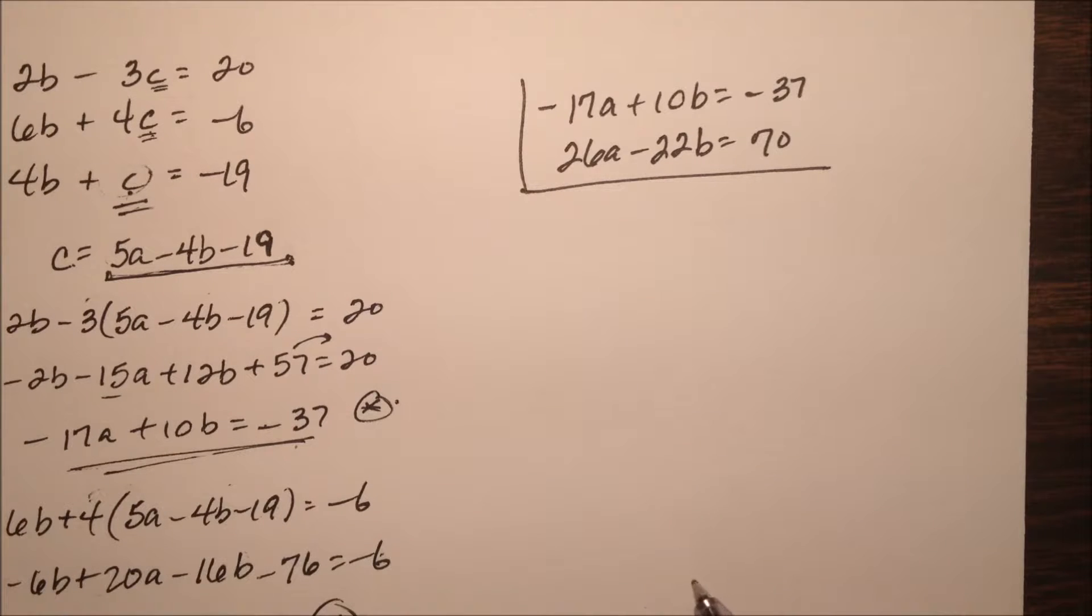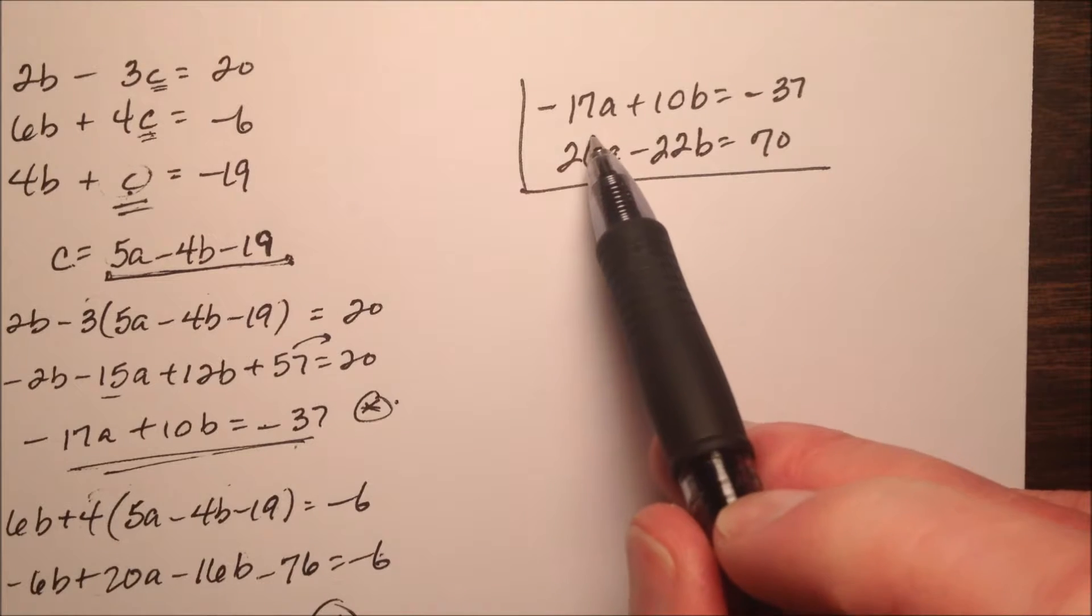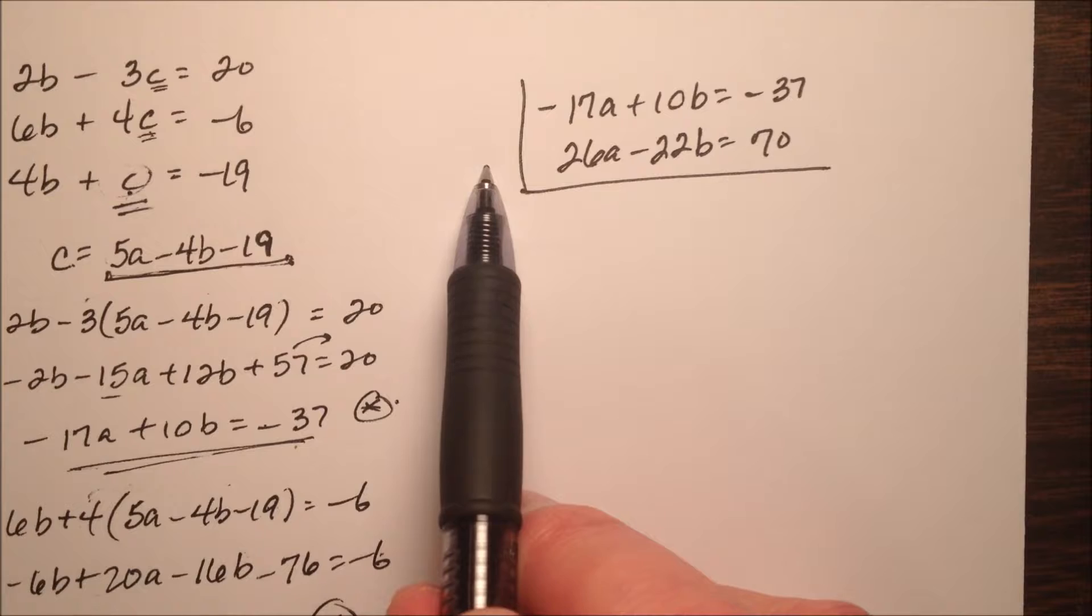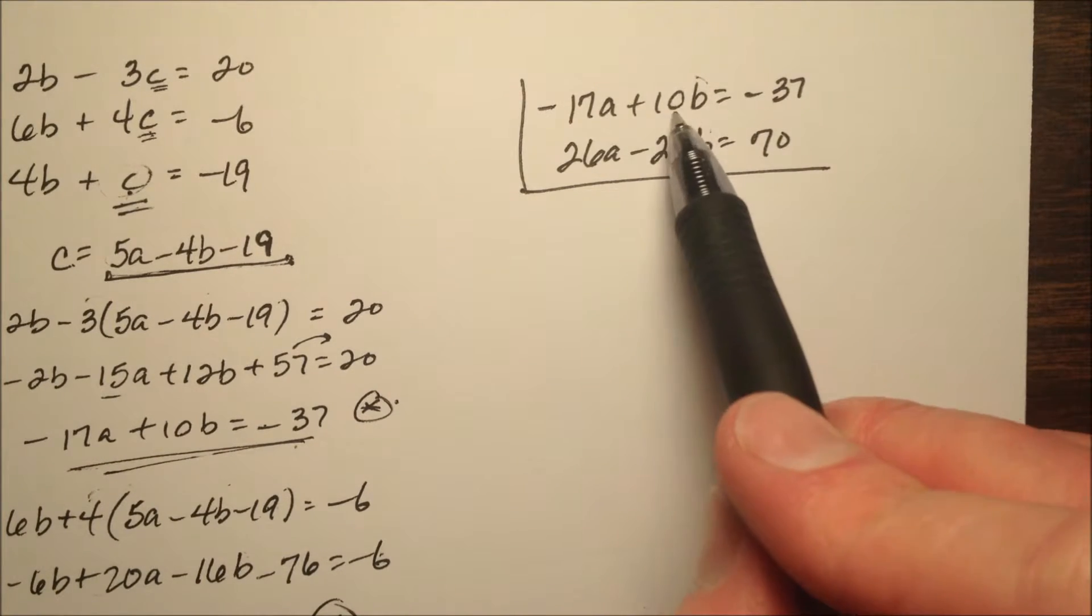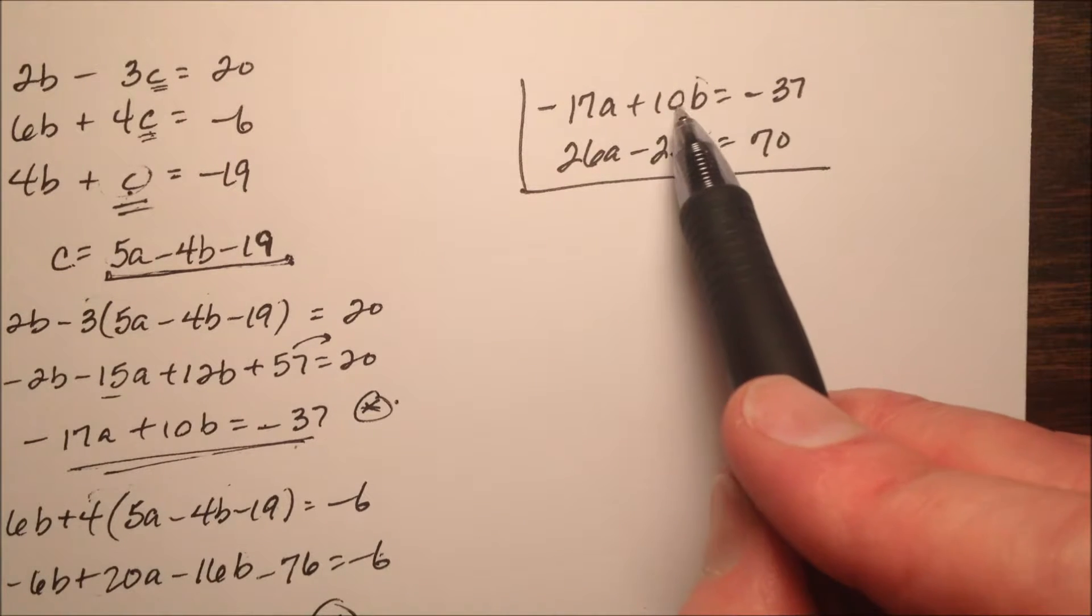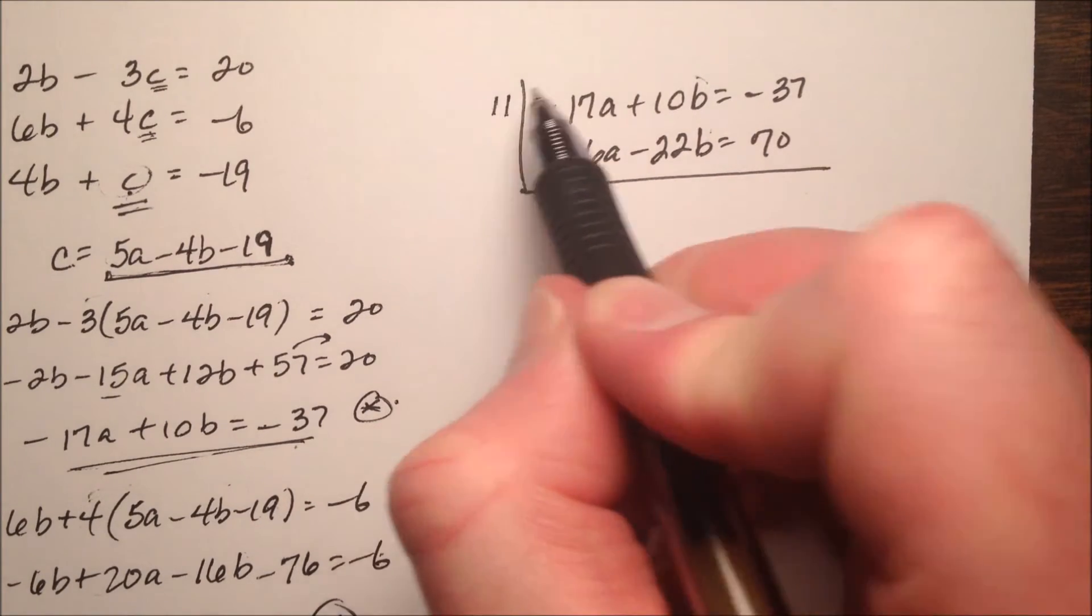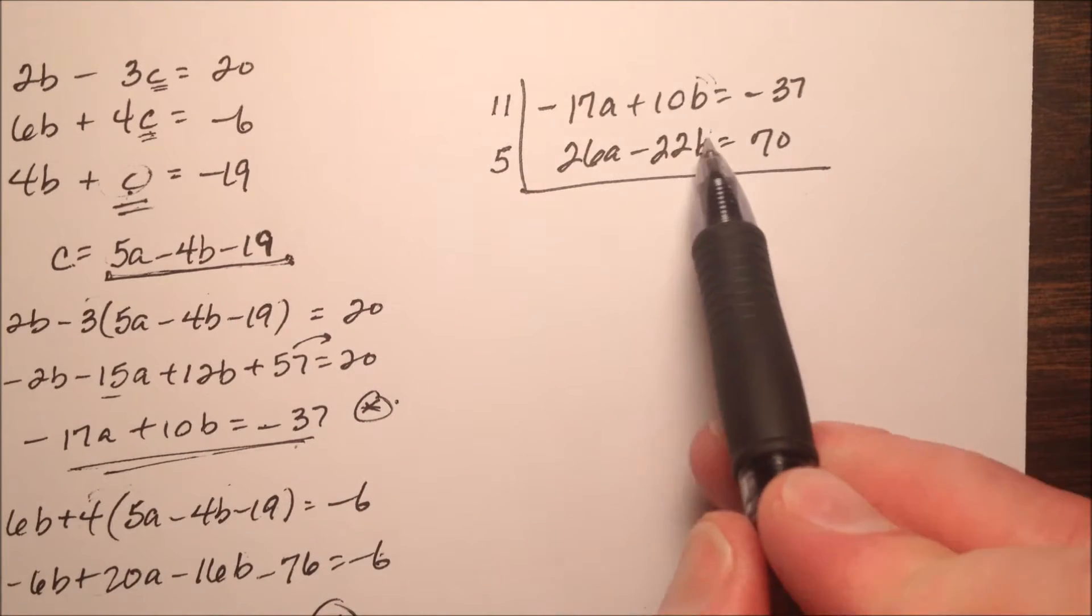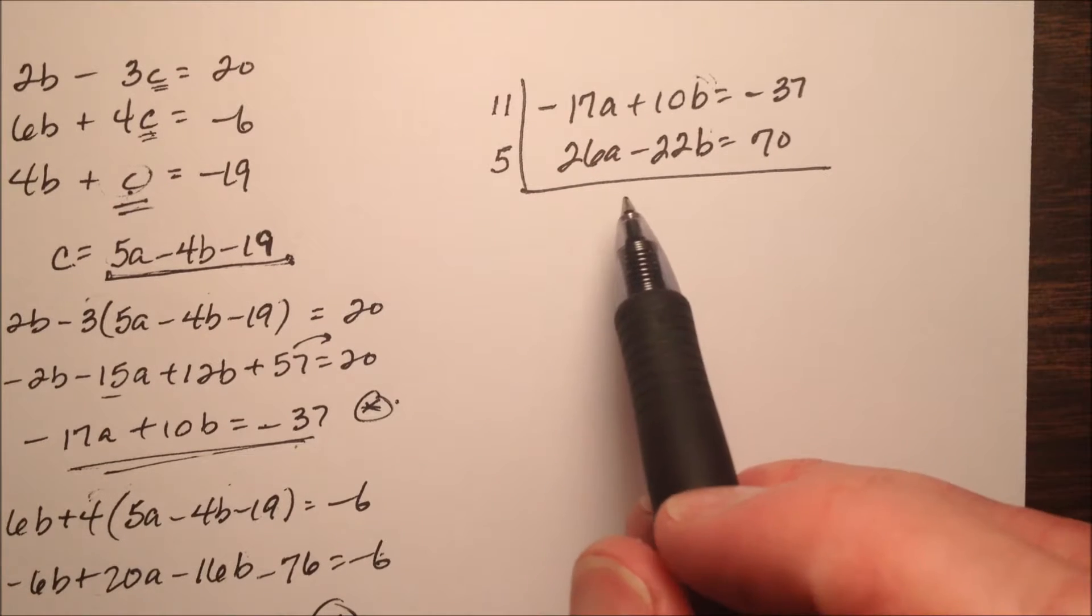So what variables should we go ahead and eliminate? Well, 17 and 26, I know 17 is prime, so if I was to eliminate my a's, I'd be multiplying by 26 and 17, and that's pretty big. Let's look at my b's. Well, I notice they have a greatest common factor of 2, so I don't just have to multiply them together. It looks like the least common multiple of 10 and 22 will be 110, so I could multiply the top equation by 11 and the bottom equation by 5, and that will eliminate my b's, and that seems like a lot easier values to work with.